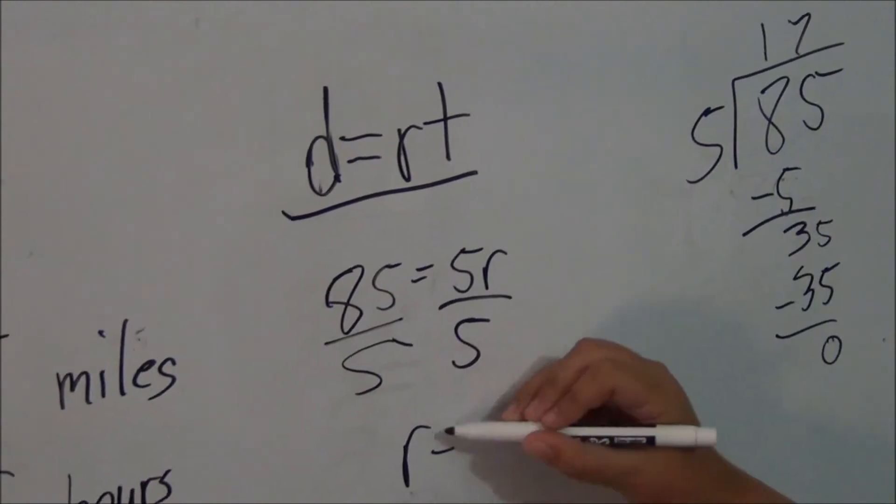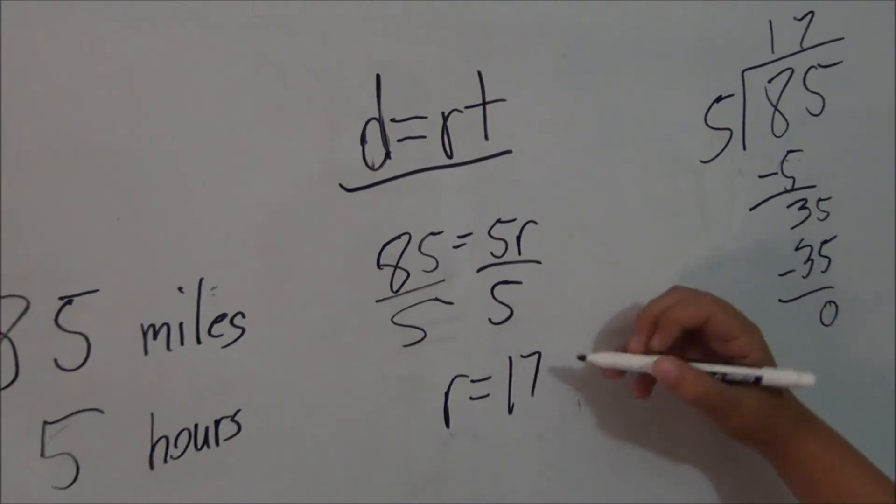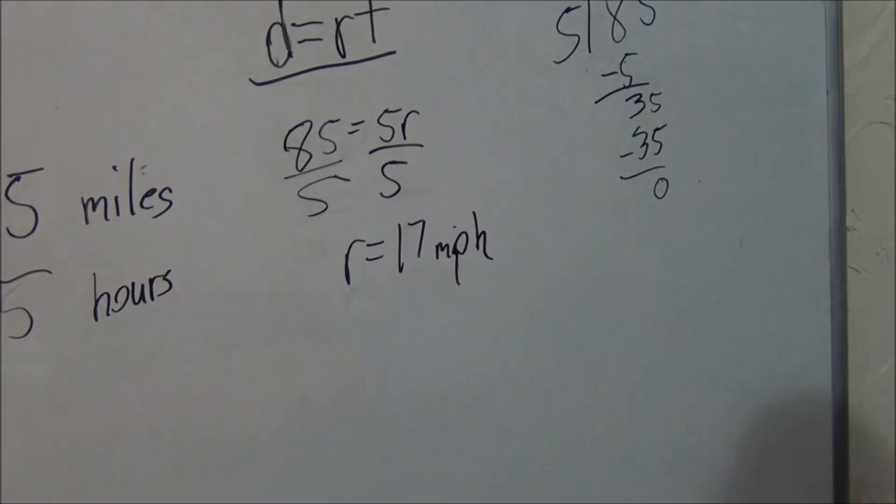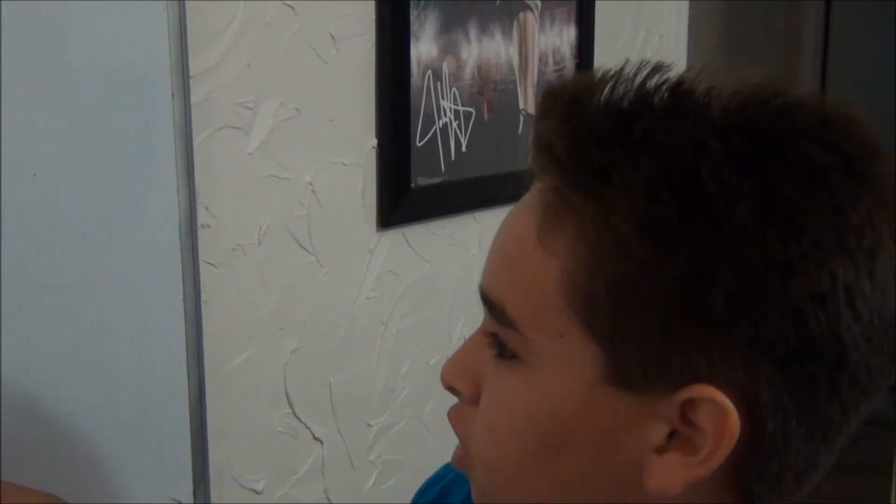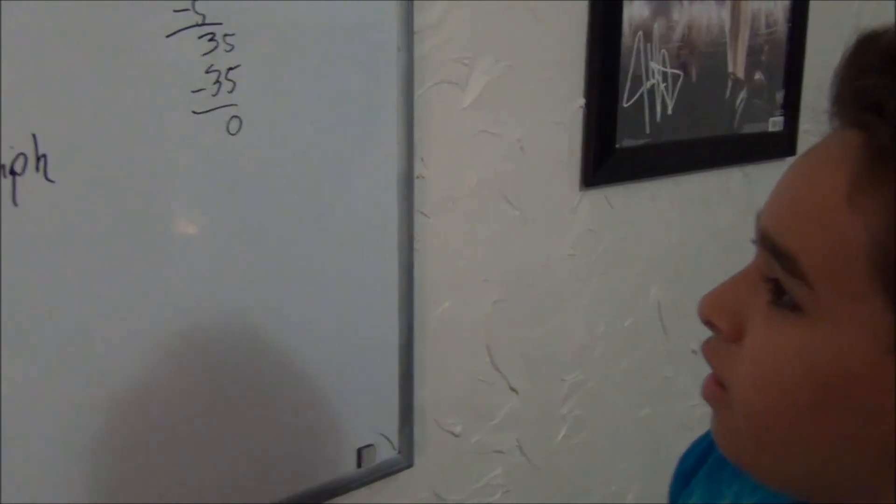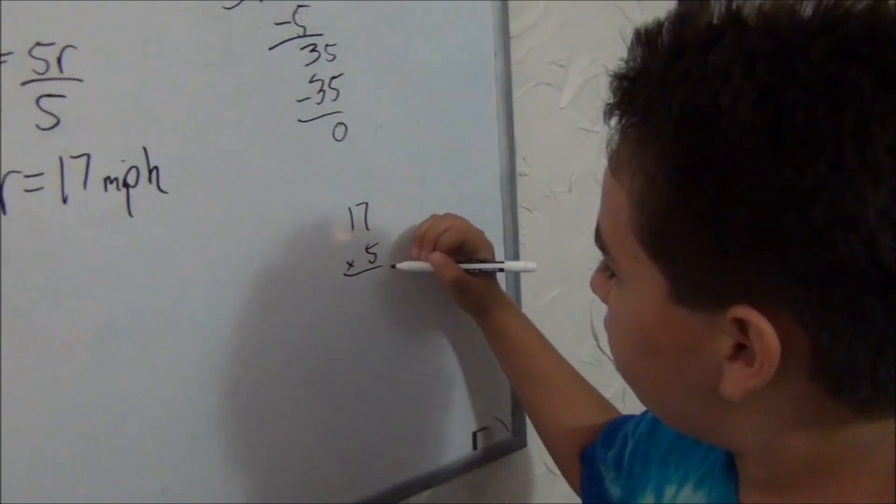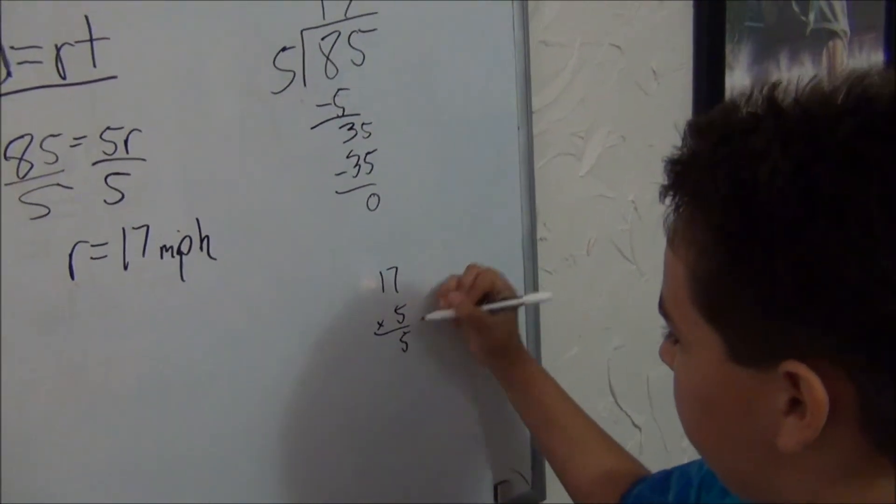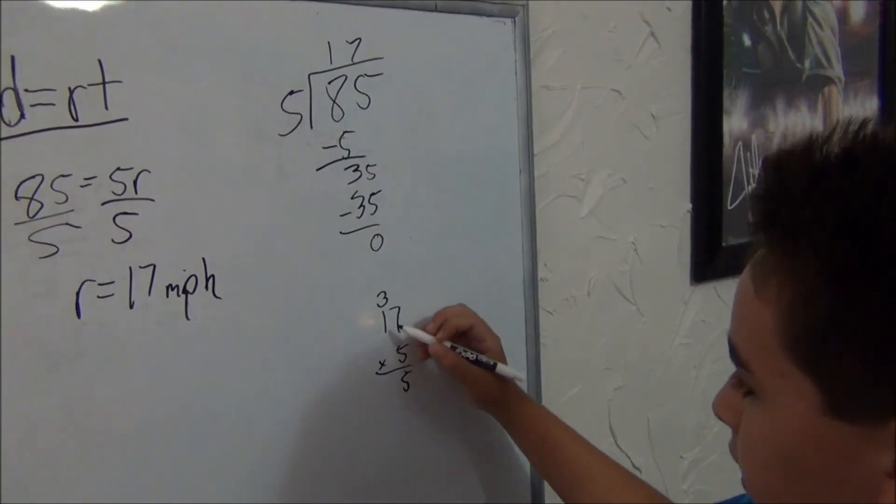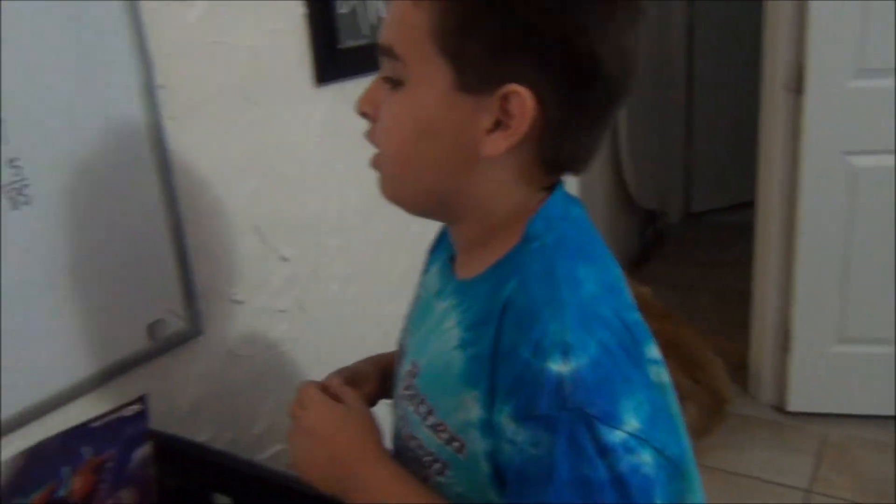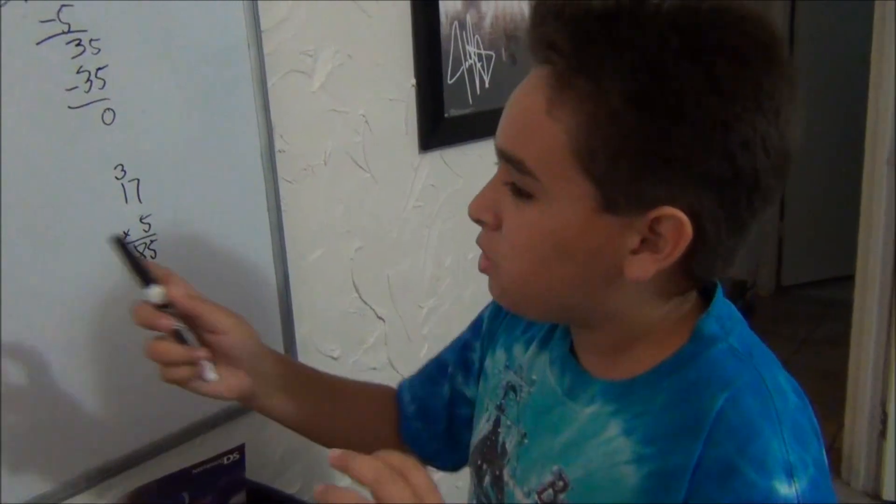So, now we have r equals 17, which means the train is traveling at 17 miles per hour. Very good. You can always check your work by going back and plugging in your variable. Let's do the work on the side here again. 17 times 5. We have 5, carry 3. 5 times 1 is 5 plus 3 is 85. So, that confirms it. The rate was 17 miles per hour.